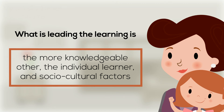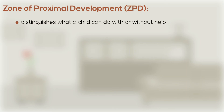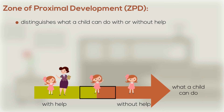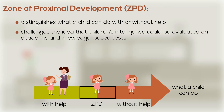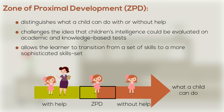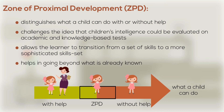A second term introduced by Vygotsky was the zone of proximal development, which distinguishes what a child can do with or without help from an abler person. This theory was developed to challenge the idea that children's intelligence could be evaluated on academic and knowledge-based tests. The zone of guidance allows the learner to transition from a set of skills he or she already has to a more sophisticated skills set, which generally helps in going beyond what is already known, in response to the environment and society.